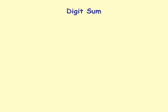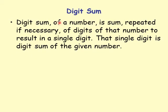The digit sum of a number is the sum — repeated if necessary — of the digits of that number to result in a single digit. We are adding the digits of a number repeatedly if necessary until we get a single digit answer. That single digit is the digit sum of the given number.